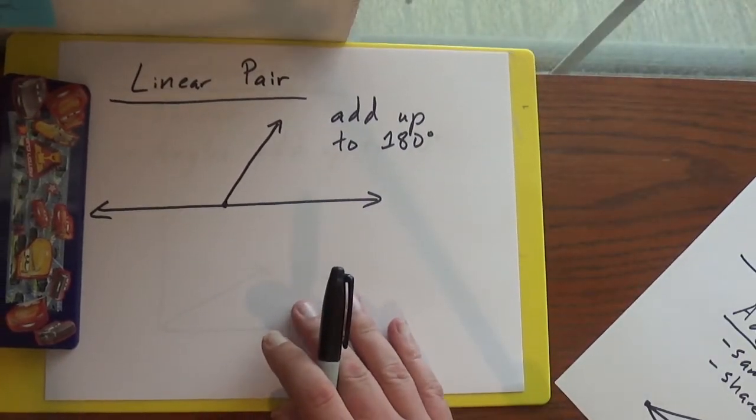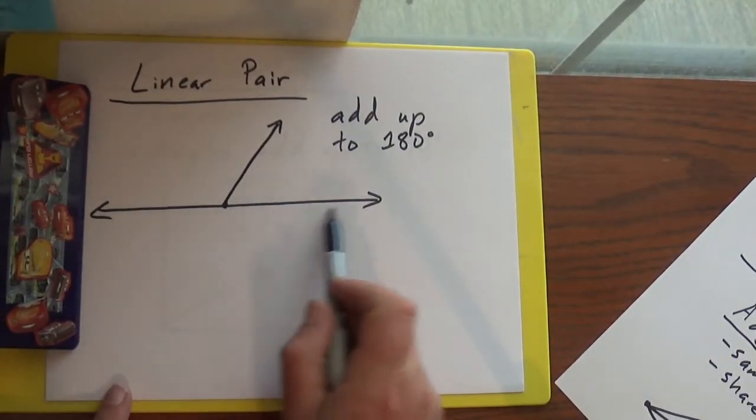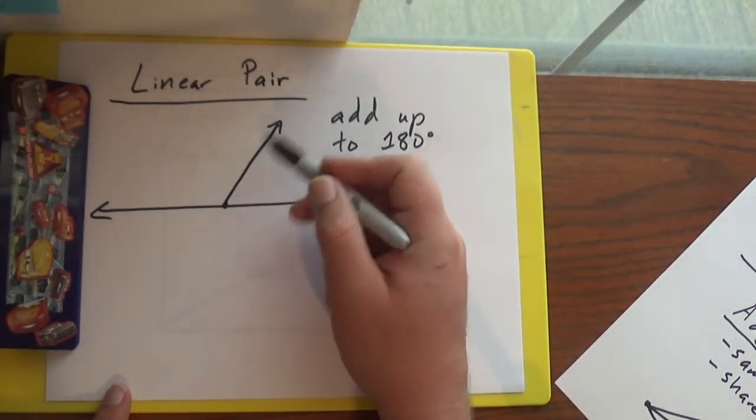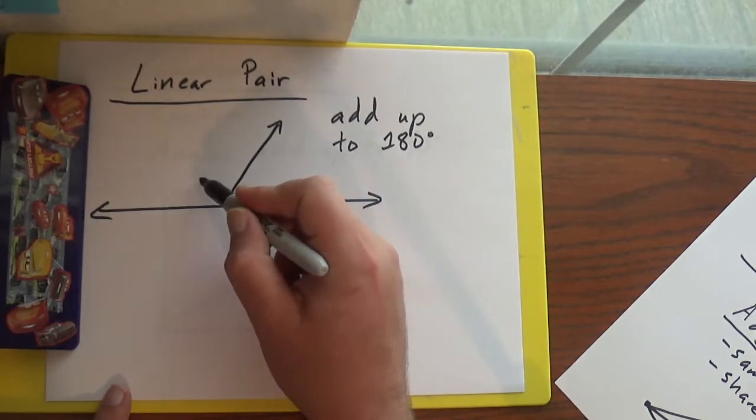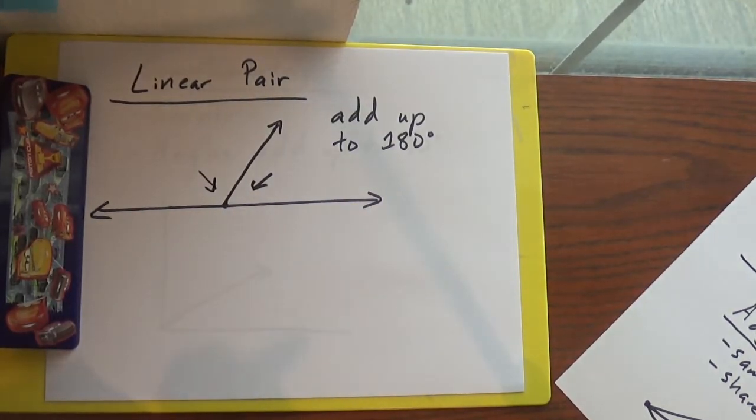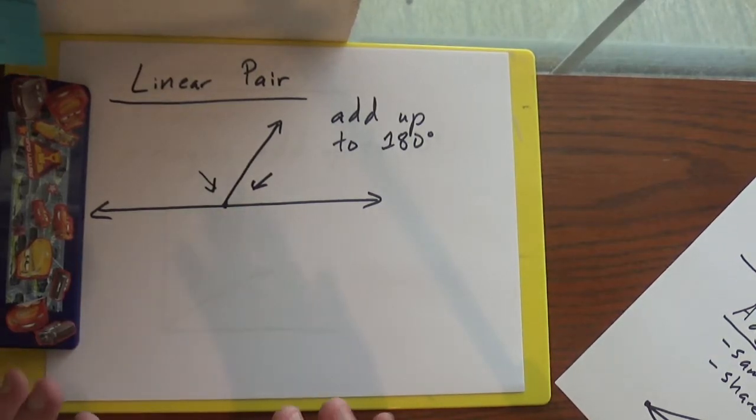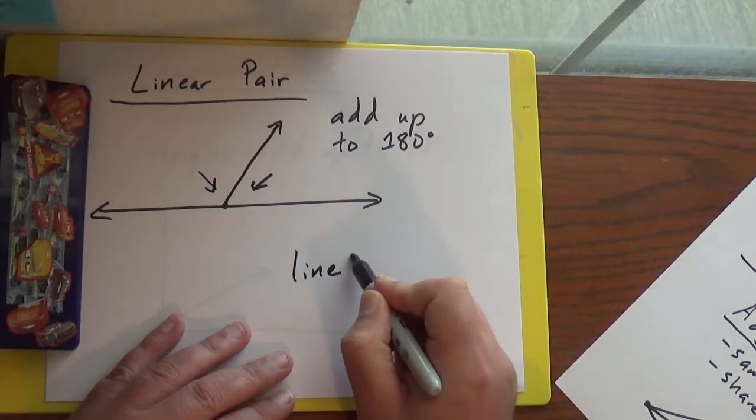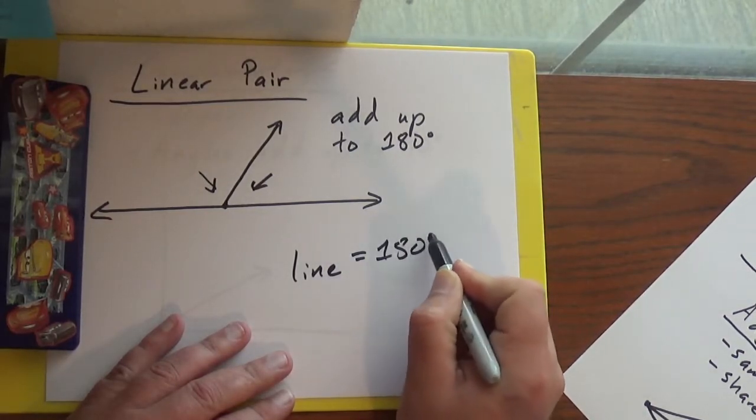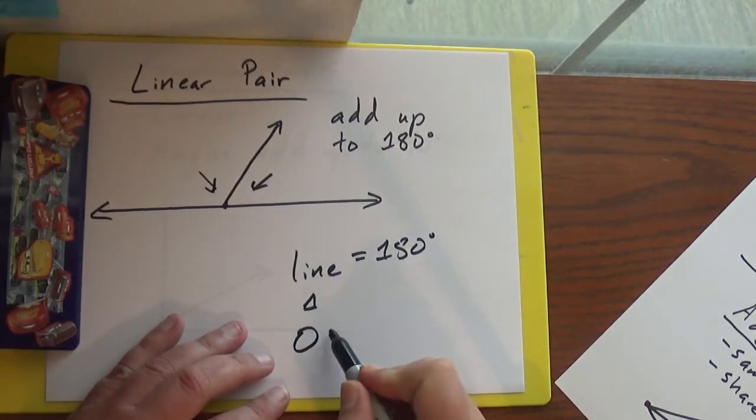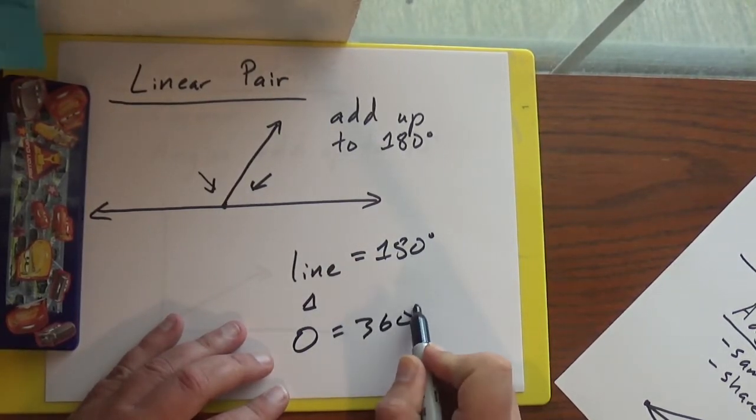Now a linear pair means we've got a line like this and we've got a ray coming off of our line. So this angle here and here make up a linear pair. Super important to remember in geometry class, a line is 180 degrees. So is a triangle. A circle is 360 degrees.